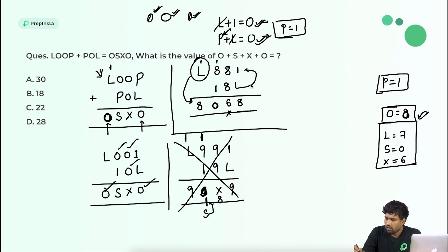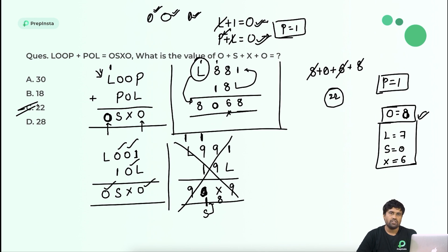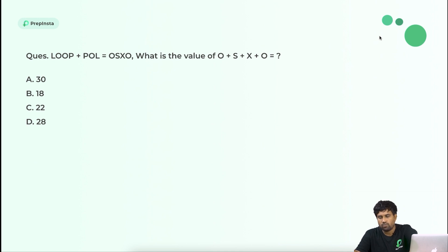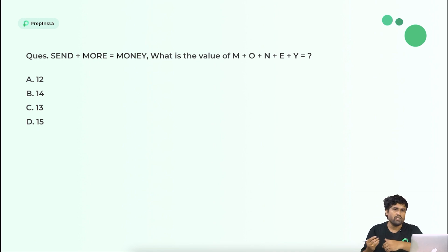L plus one equals eight, so L equals 7. S equals 0, X equals 6. Final answer: O=8, S=0, X=6, O=8. Sum: 8+0+6+8 equals 22.